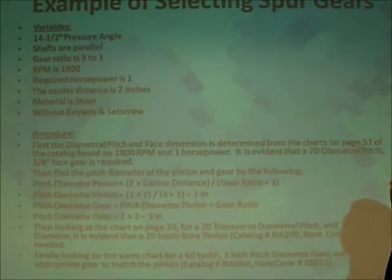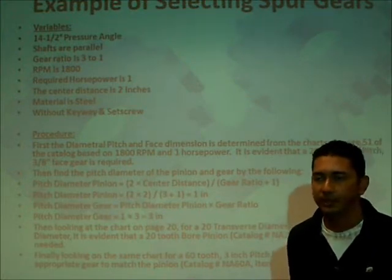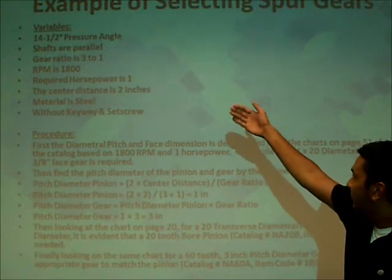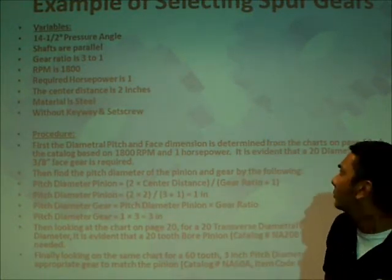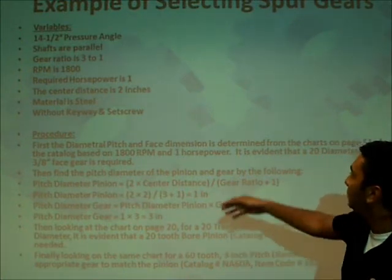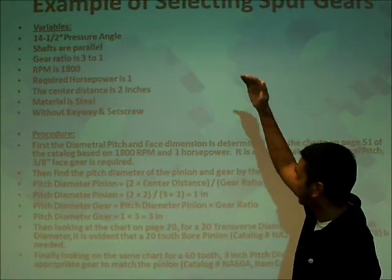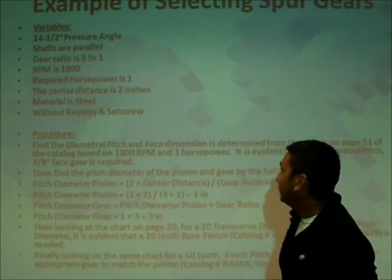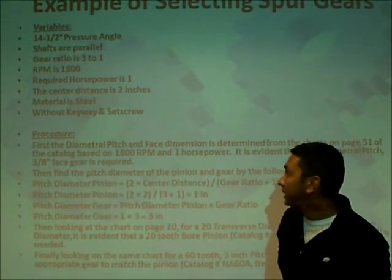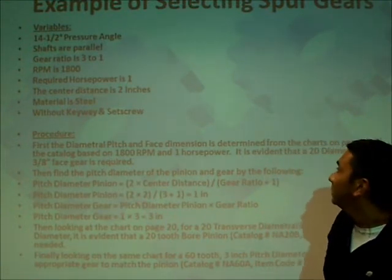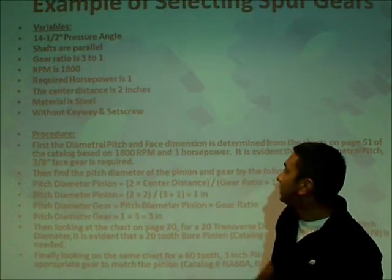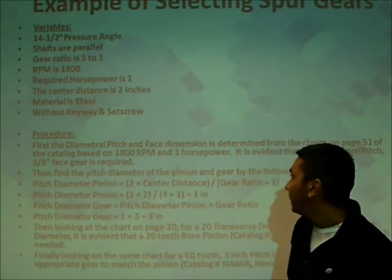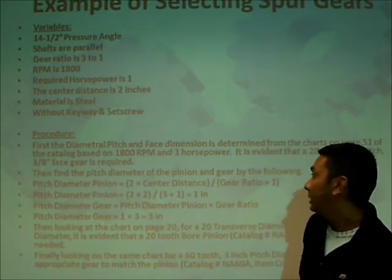This is an example of selecting spur gears. In order to select the gears, certain variables have to be known. In this example, we have chosen some variables, mostly at random. We are assuming that our spur gear needs a 14.5-degree pressure angle, the shafts are parallel, the gear ratio is 3 to 1 (pinion gear to the driven gear), RPM is 1800, required horsepower is 1, center distance 2 inches, material is steel, and these gears will be without a keyway and a set screw.